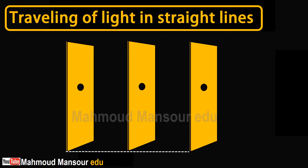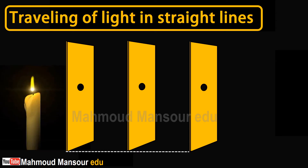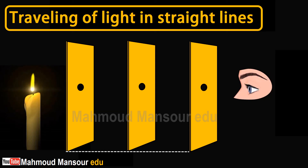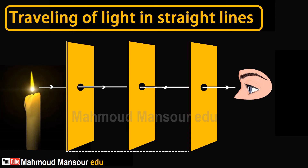Put them in a row in front of a lit candle, where all holes and the flame of the candle are on the same straight line. Look at the flame through the hole of the third partition. Observation: You can see the flame of the candle.